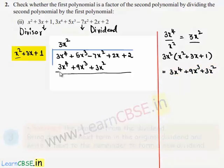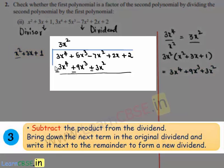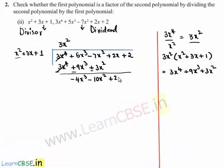On subtracting, 3x⁴ and minus 3x⁴ cancel. 5x³ minus 9x³ gives minus 4x³, and minus 7x² minus 3x² gives minus 10x². This becomes plus 2x plus 2. The new dividend is minus 4x³ minus 10x² plus 2x plus 2.